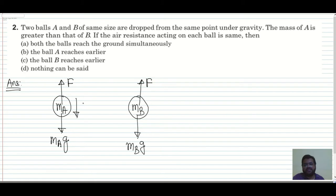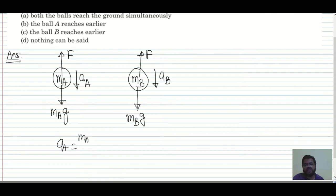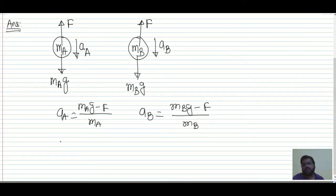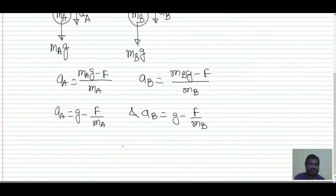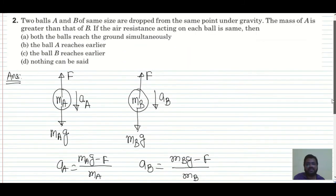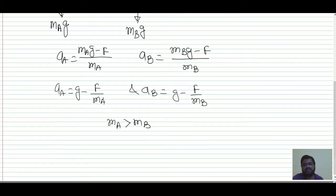The acceleration of A is a_A = (m_A×g − F) / m_A = g − F/m_A, and for B: a_B = g − F/m_B. Since mass of A is greater than mass of B, F/m_A is smaller than F/m_B. So a_A is greater than a_B.